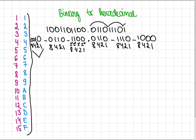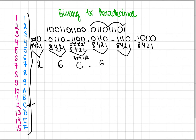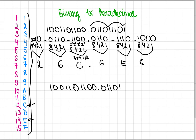So here we just have 2. Here we have 4 plus 2 is 6. And here we have 8 plus 4, which is 12, but in the hexadecimal system you don't have 12 — you actually have C. So that's C. And here we have 6. Here we actually have 14, but in hexadecimal we don't have 14, we have E. So that will be E. And here we have 8. So 1 0 0 1 1 0 1 1 0 0 0 1 1 1 0 1 in binary equals 2 6 C . 6 E 8 in hexadecimal.